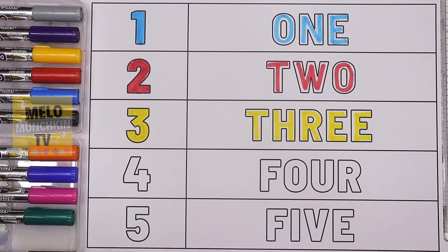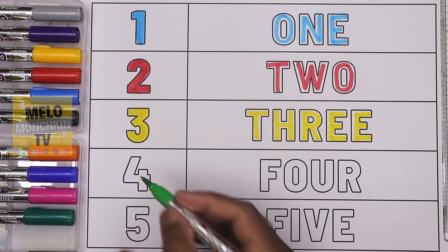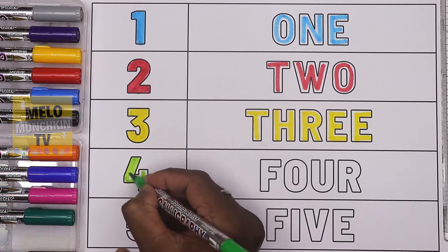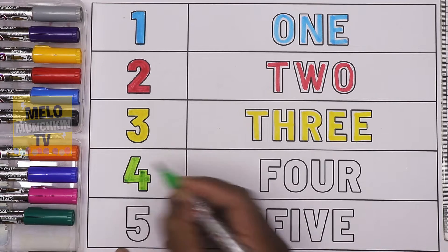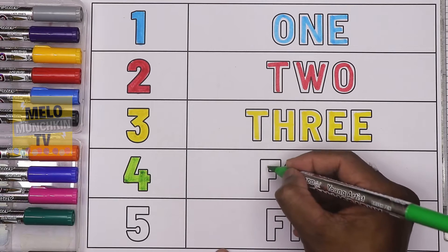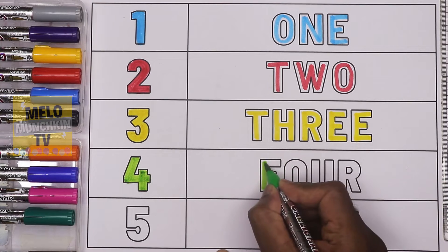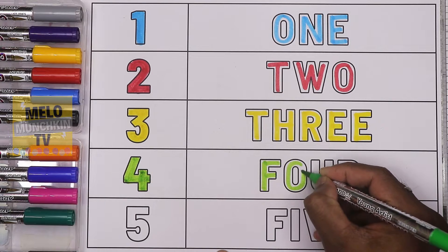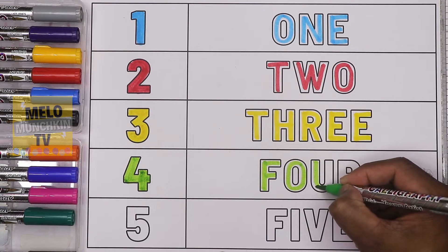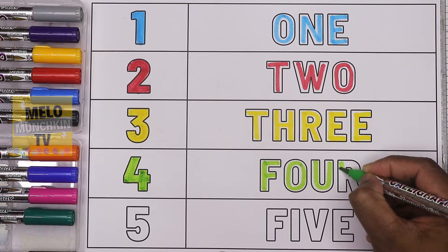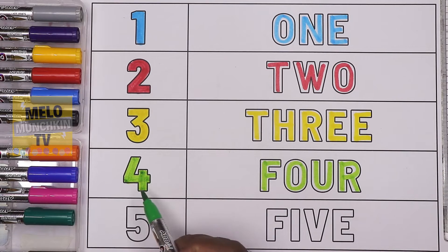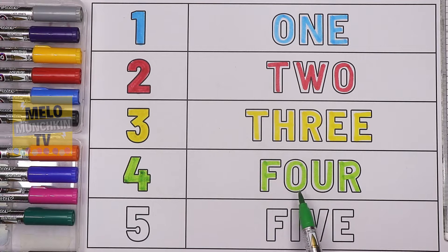Next, I'll take light green color to write number four. This is number four. The spelling of four is F-O-U-R. Four.